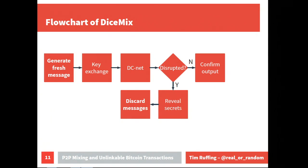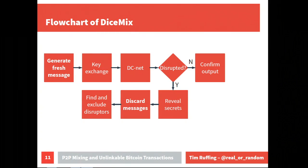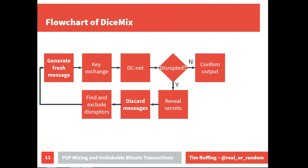Because anonymity is broken in the disruption case, everybody can replay the messages of other participants, see who disrupted the protocol, and exclude that disruptor. After exclusion we start from scratch with a fresh message and a new protocol run.